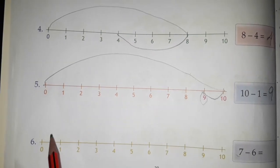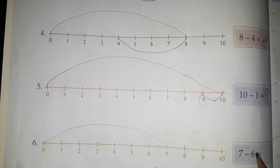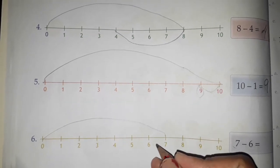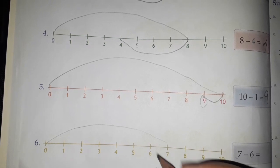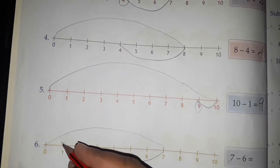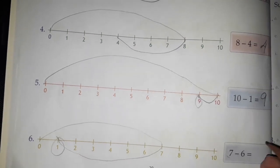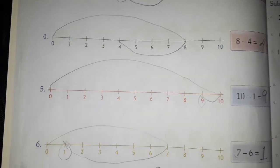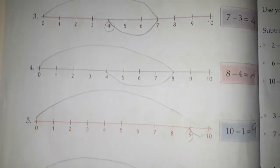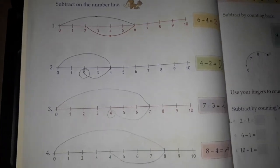The next one: 7 minus 6. We go from 0 to 7, then how much do we have to minus? 6. So we move left 6 steps: 1, 2, 3, 4, 5, 6. If you have minused 6, what will be the answer? 1 will come. Correct — 7 minus 6 is equal to 1. So now you understand how to subtract numbers on the number line. This is number line subtraction. Thank you.